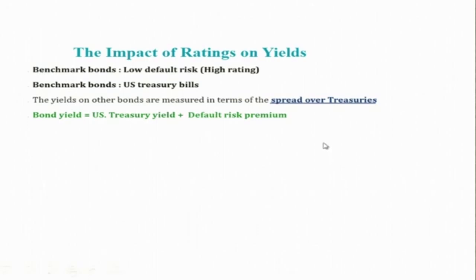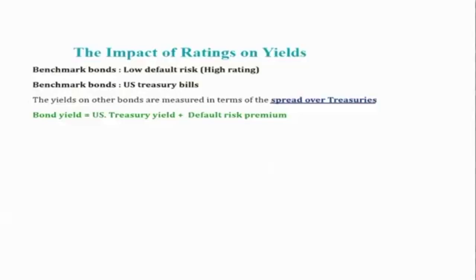Coming to the risk structure of interest rates: in the previous lecture we discussed how default risk is measured by different risk rating agencies, and based on that we have seen that debt instruments with better or higher ratings will have to pay a lower interest rate, compared to debt instruments with bad or low ratings — also called junk bonds or low investment grade bonds — which have to pay a high interest rate when they borrow from the market.